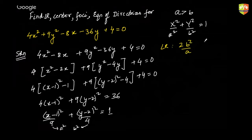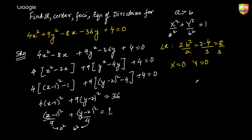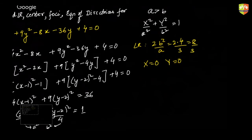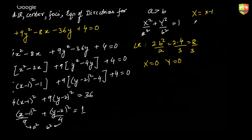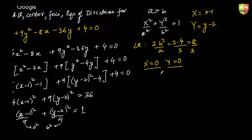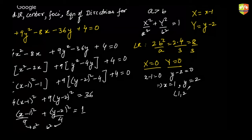Length of the latus rectum is 2b²/a = 2 × 4/3 = 8/3. For the center: the role of x is played by (x − 1) and the role of y by (y − 2). Setting x − 1 = 0 and y − 2 = 0 gives x = 1 and y = 2, so the center is at (1, 2).